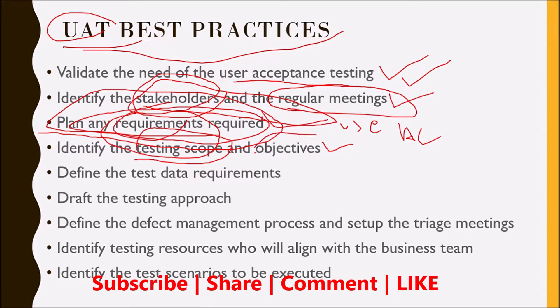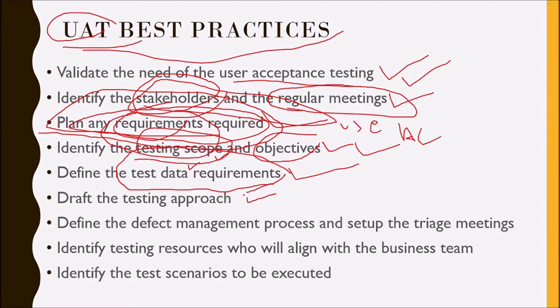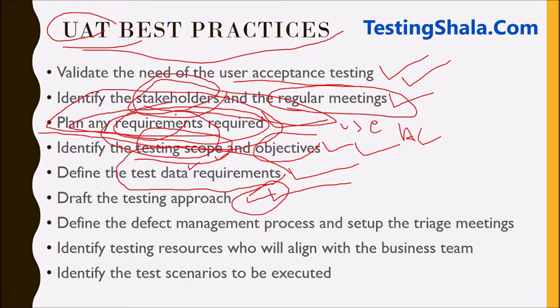The next important item is identifying the testing scope and objectives — what are the things we are going to test as part of UAT. Once we identify everything it needs to be documented, including the objectives. You should also understand if there is any requirement for test data. Once the scope and data are clear, we should come up with the testing approach — what types of testing will be performed against the requirements shared by the business.